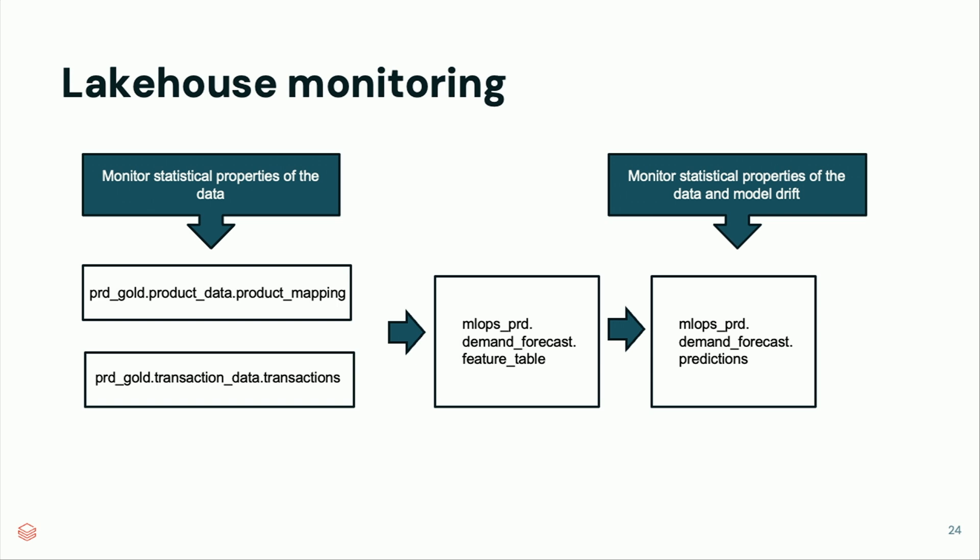You can also set up a monitoring table on the predictions that data scientists generate — monitoring data properties and model drift. One limitation of most monitoring systems is that you must know the ground truth before you can say whether something is going wrong with your model, and by then it can be too late. So it's important to track that very carefully.